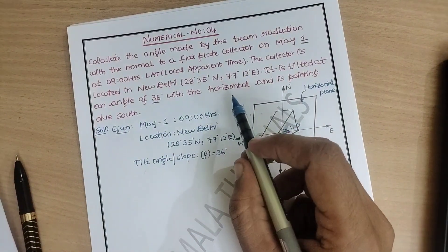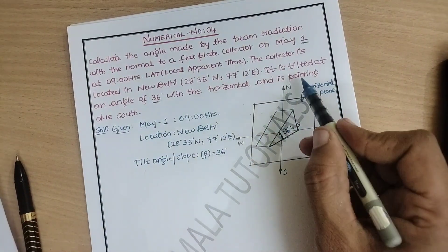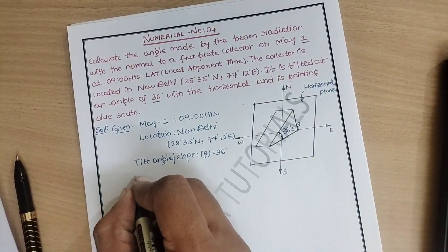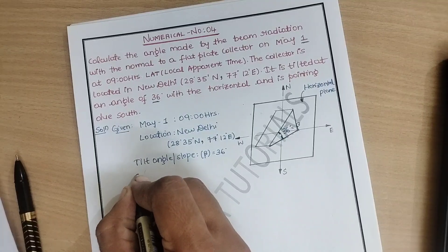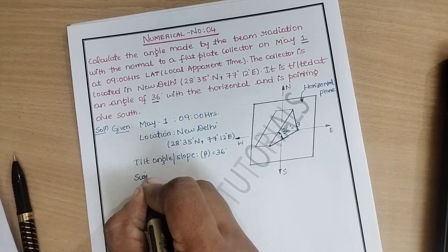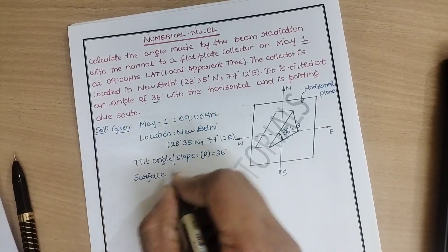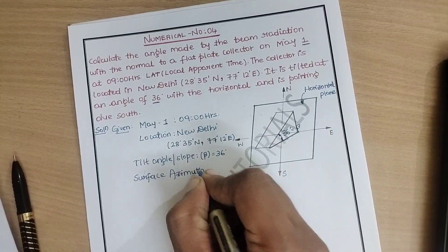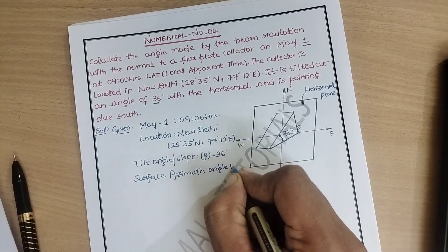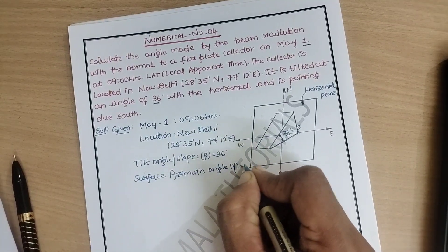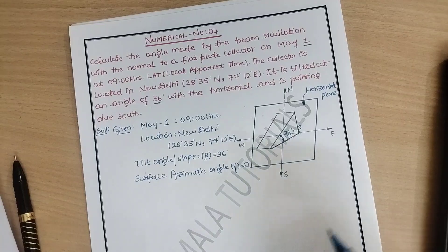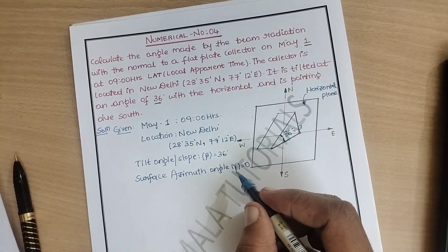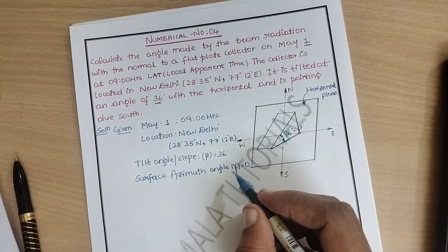It is pointing due south — this is very important. Whenever it is pointing due south, the surface azimuth angle gamma will be equal to zero.